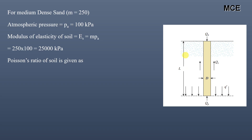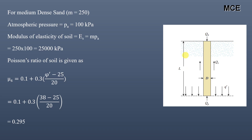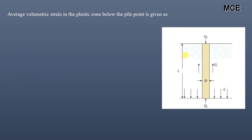Poisson's ratio of soil is given as μ_s = 0.1 + 0.3 × [(φ' − 25) / 20] × (q' / p_a). Substituting φ' = 38°, q' = 192 kPa, and p_a = 100 kPa, we get μ_s = 0.295.